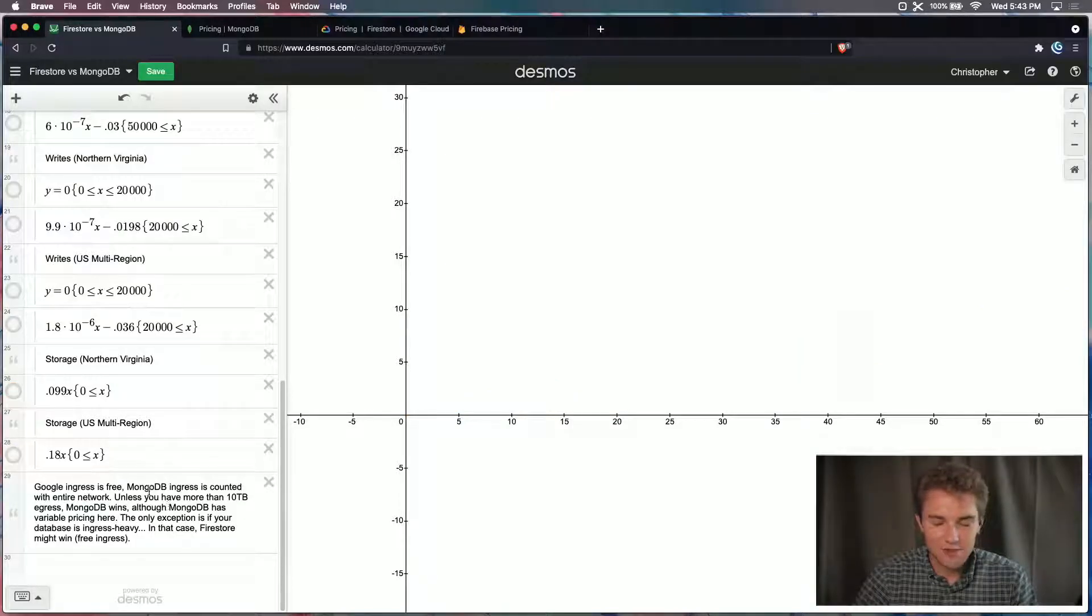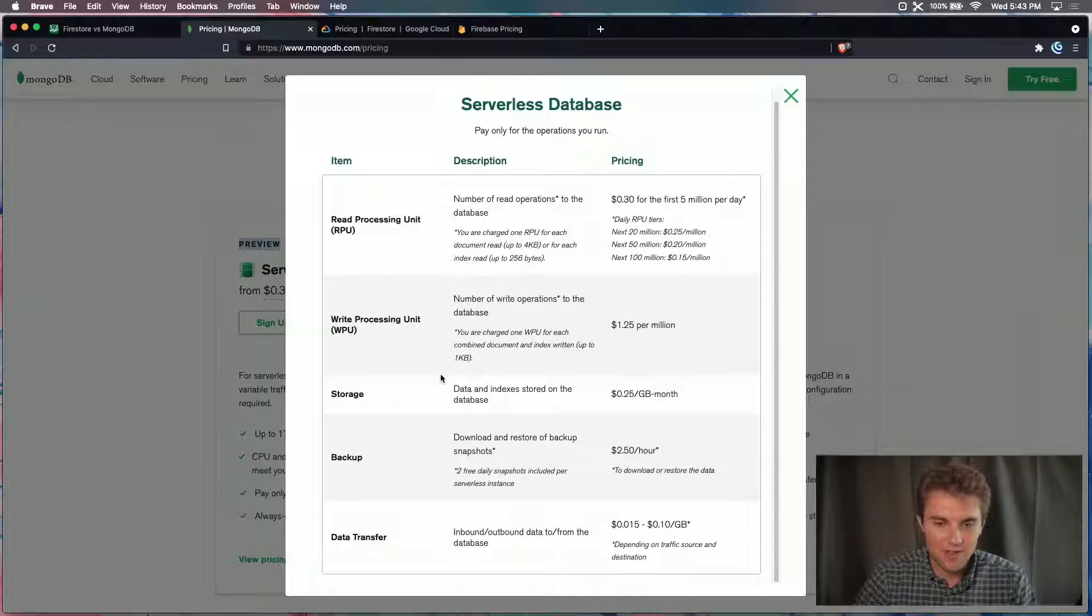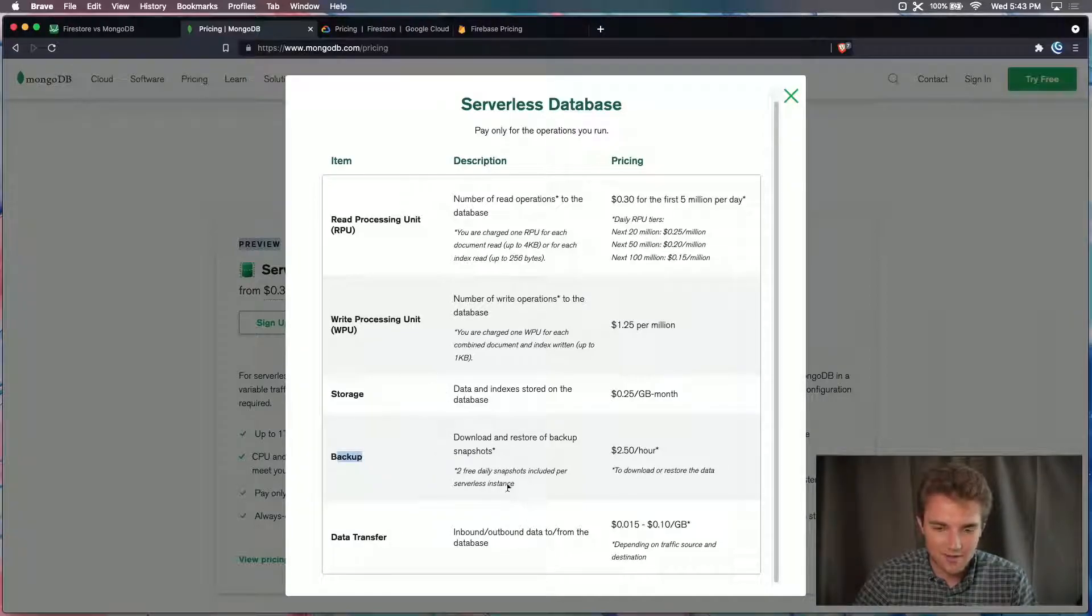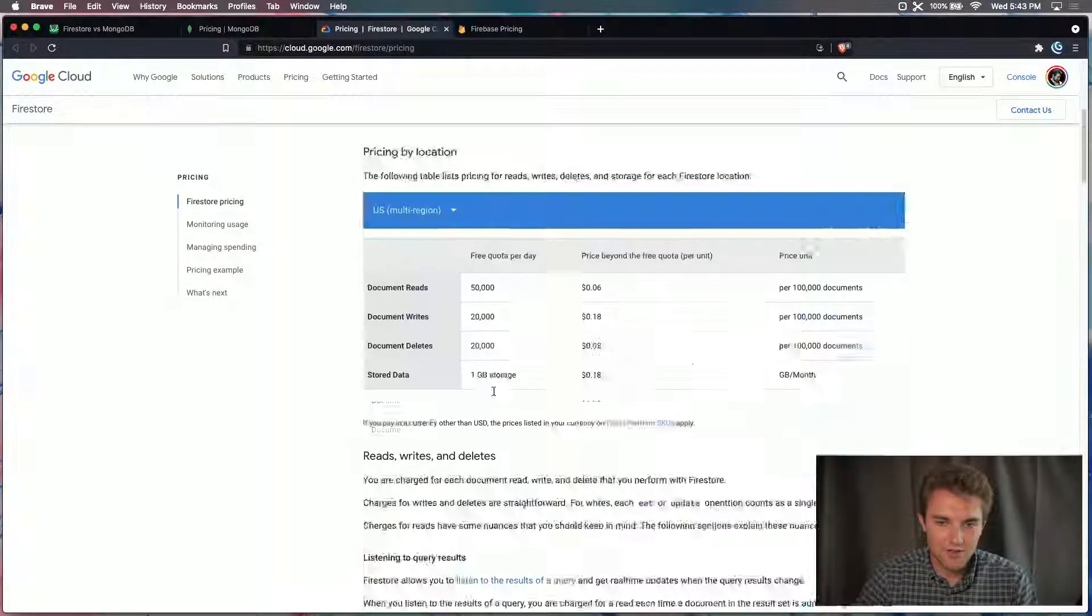Now there's one other thing to consider, and that's networking costs. Actually, there are a couple other considerations, but probably the biggest one is networking costs. Also, MongoDB allows for data backup. But okay, so the thing with networking costs here is MongoDB does it by data transfer, and it's all inbound and outbound data. And it's variable pricing, so it depends on the traffic source and destination right here. And that's the same thing for Firestore.